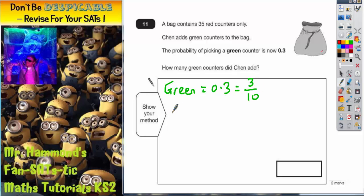For red, if the probability of picking green was 0.3, remember probabilities must add to a whole one. So if the probability of picking green is 0.3, the probability of red must be 0.7, because 0.3 and 0.7 adds up to a whole one.